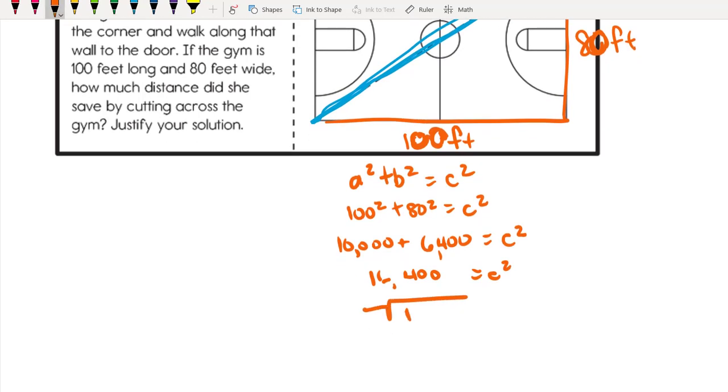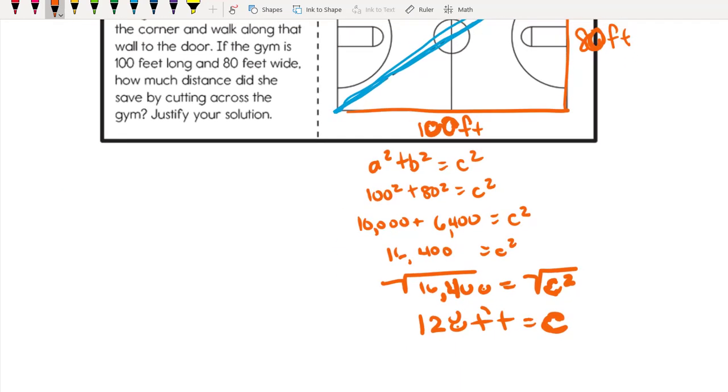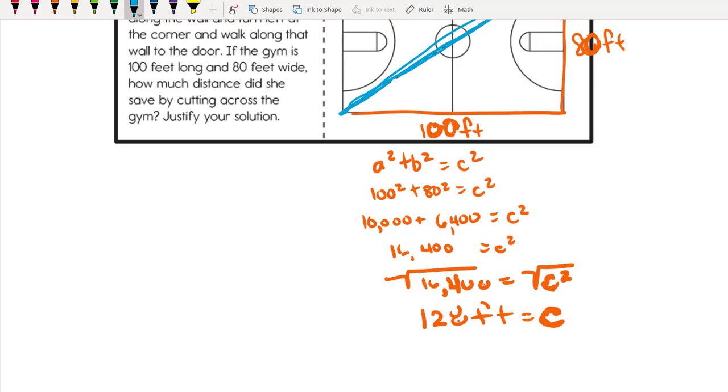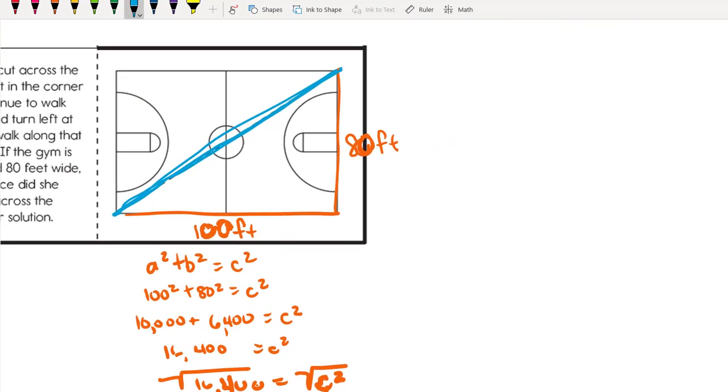Then we square root both sides, doing the same operation to keep it balanced. The square root of 16,400 is 128, and that will be in feet exactly. So Maya walks 128 feet. I'm going to put that here diagonally. To cut across the gym from corner to corner is 128 feet.